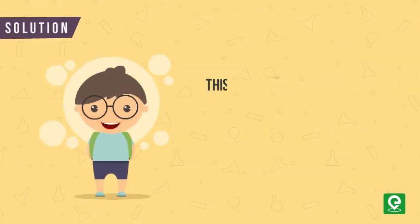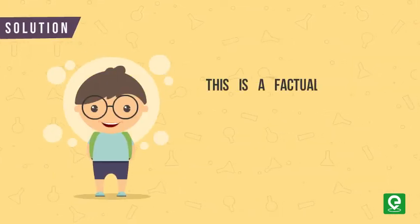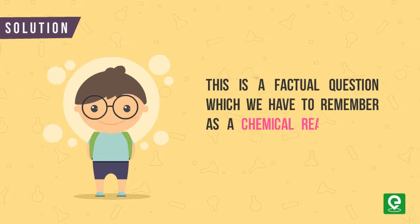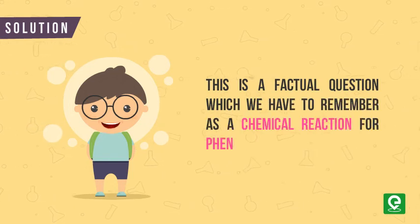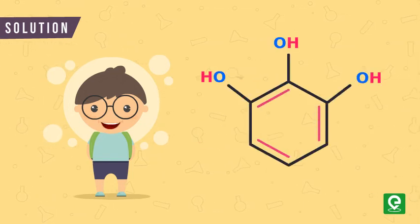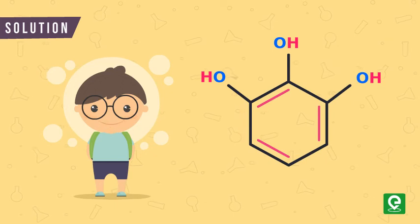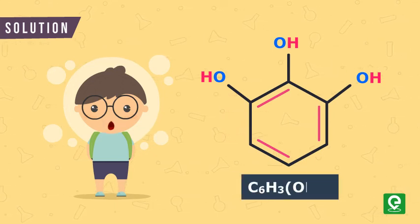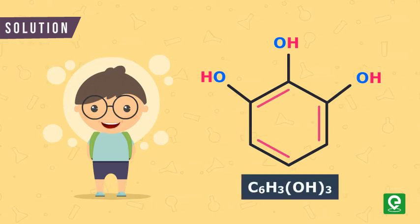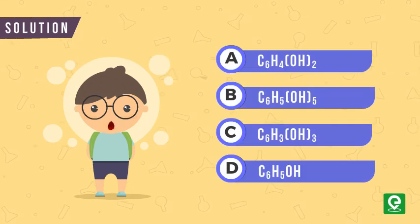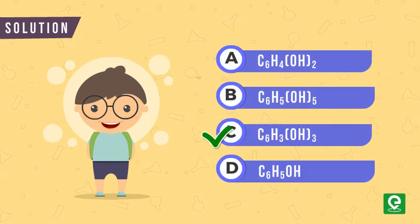Solution. This is a factual question which we have to remember. Pyrogallol is an organic compound with the formula C6H3(OH)3. The correct option is C.